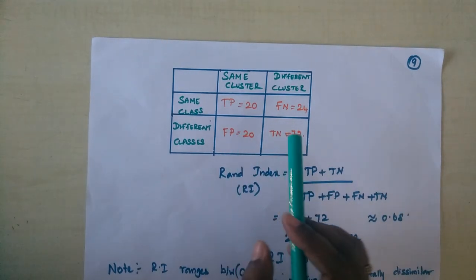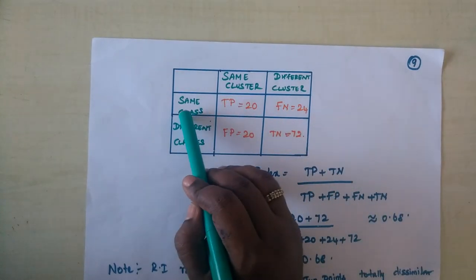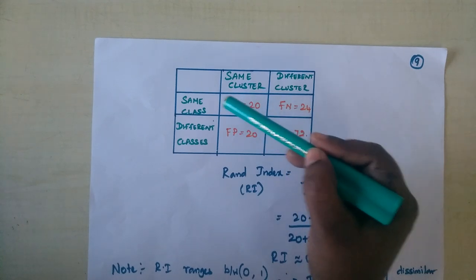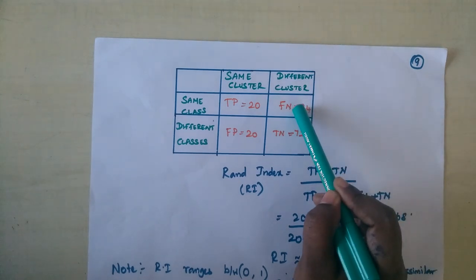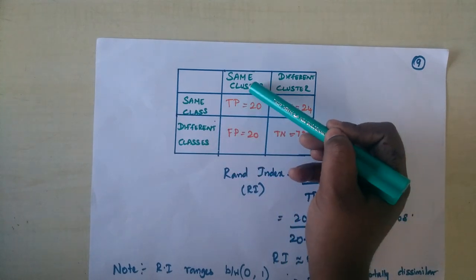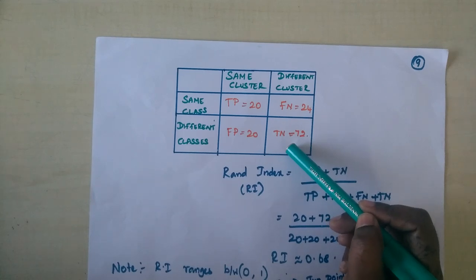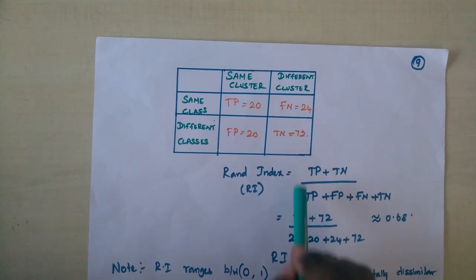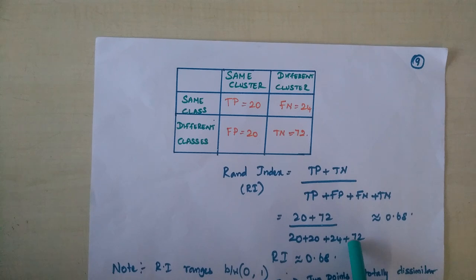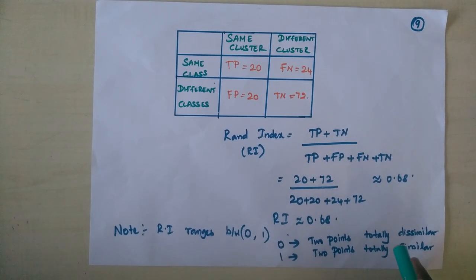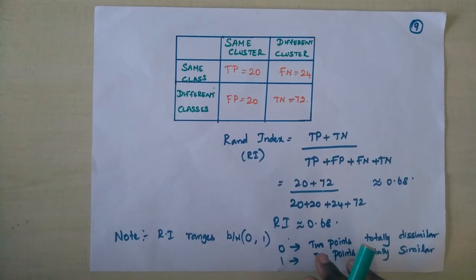To summarize the four components: data meant to be in the same class and placed in the same cluster is true positive; data meant to be in the same class but in a different cluster is false negative; data meant to be in different classes but placed in the same cluster is false positive; and data meant to be in different classes and placed in different clusters is true negative. Substituting all values into the RAND index formula gives 0.68. RAND index always lies in the range 0 to 1, where 0 indicates totally dissimilar decisions and 1 indicates perfectly similar. A value of 0.68 is fairly acceptable. This is how the RAND index for a clustering algorithm is calculated.